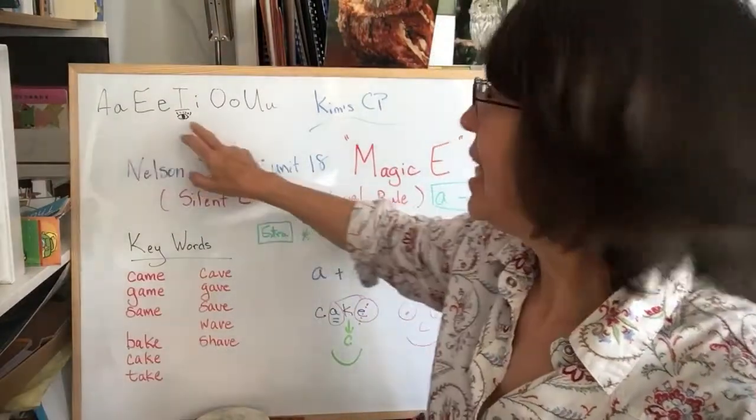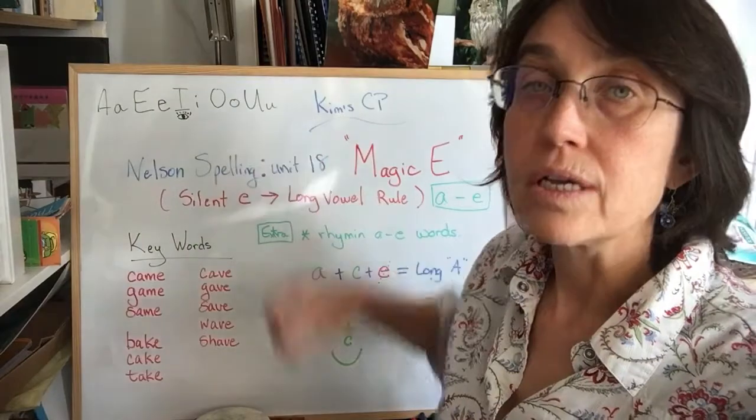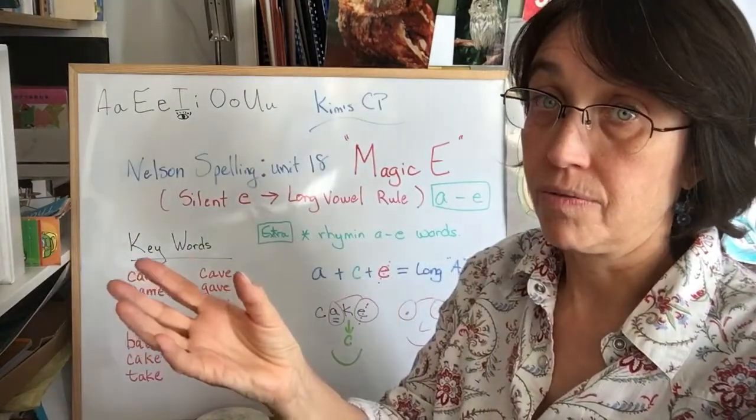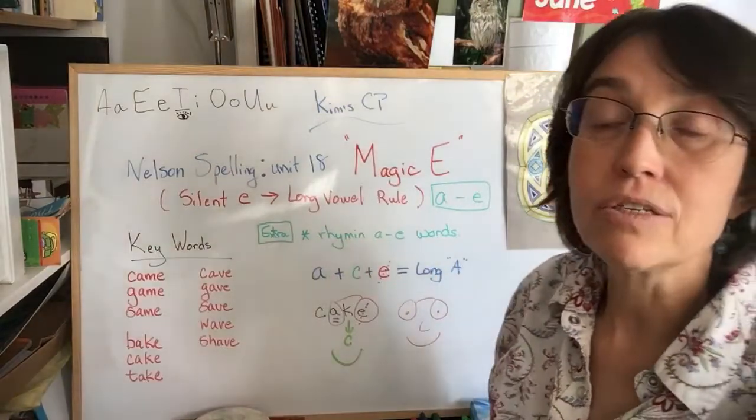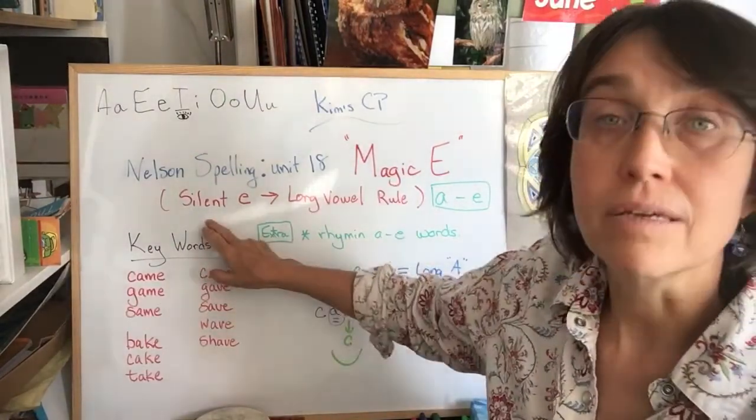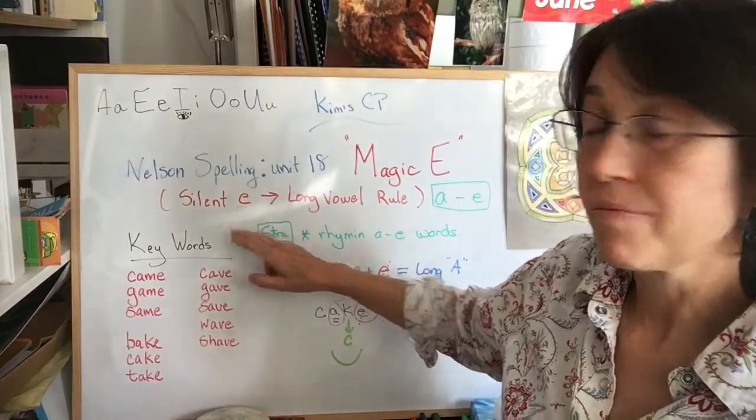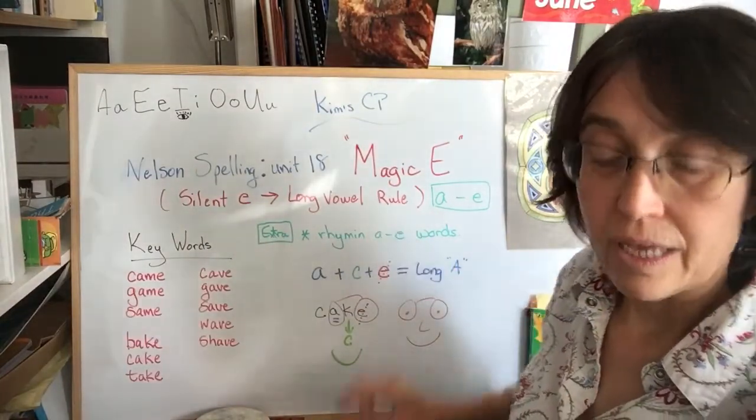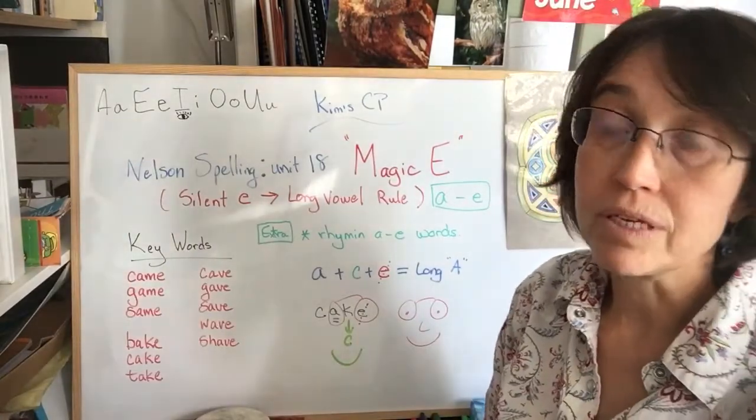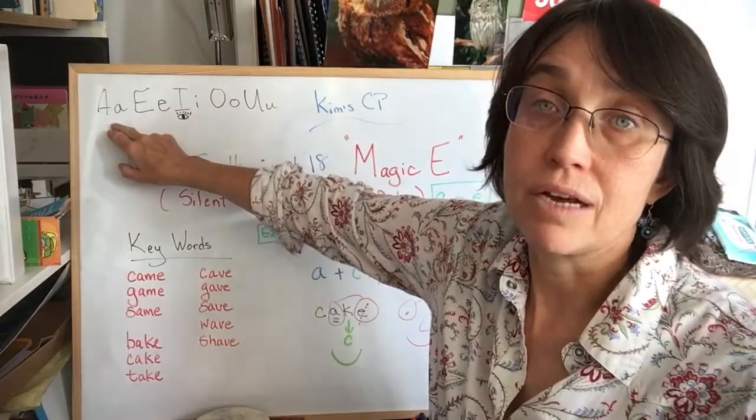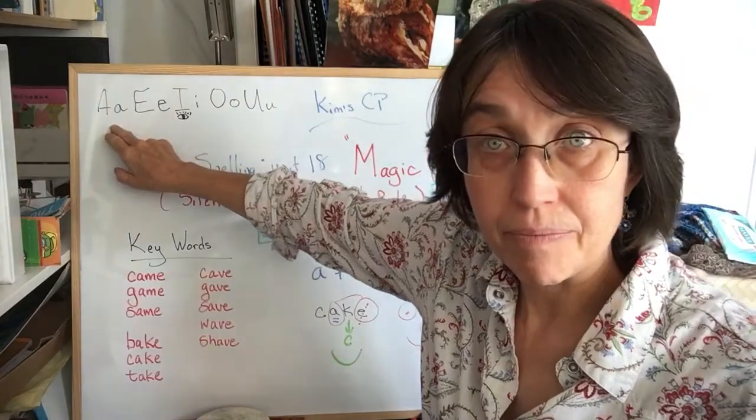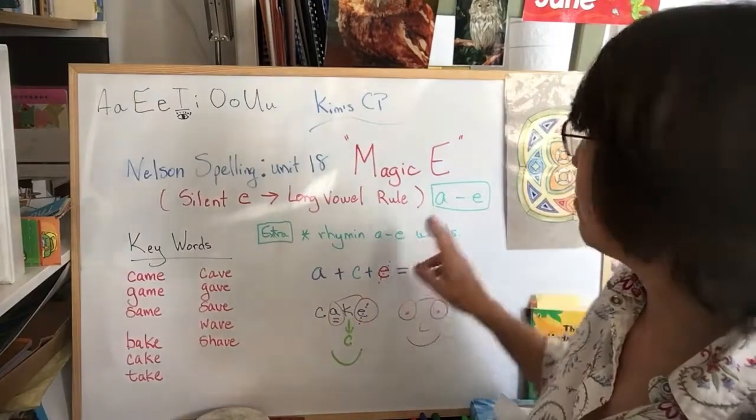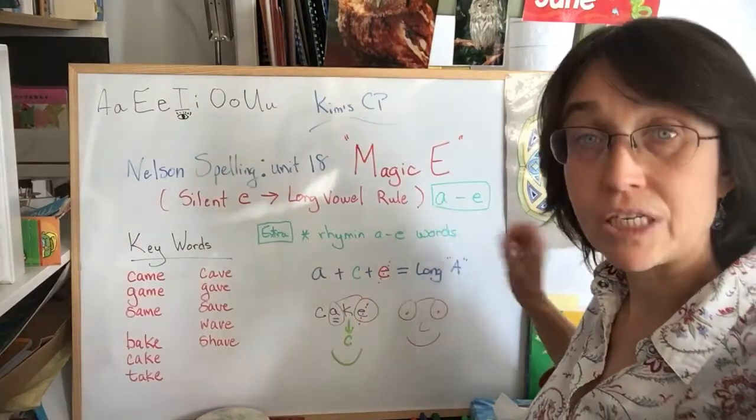A, E, I, O, U. Both the name of the letter and its long sound. So magic E is important because the magic E, again, sometimes called the silent E, creates the long vowel rule. So the vowel just before the silent E becomes the same sound as its name. In this unit 18, we'll work on the long vowel sound A, magic E.